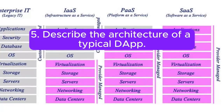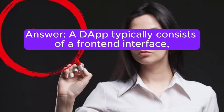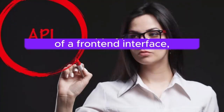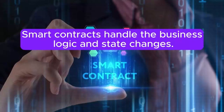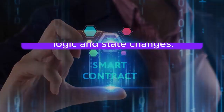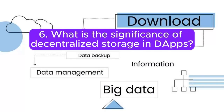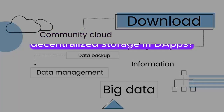5. Describe the architecture of a typical DApp. Answer: A DApp typically consists of a front-end interface, a back-end which interacts with the blockchain and smart contracts, and a decentralized storage solution. Smart contracts handle the business logic and state changes.